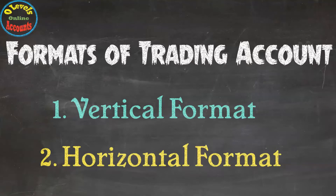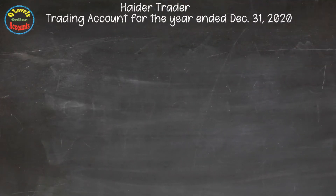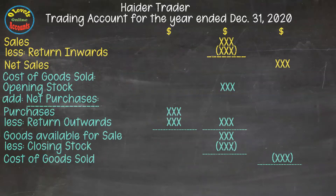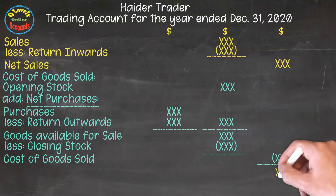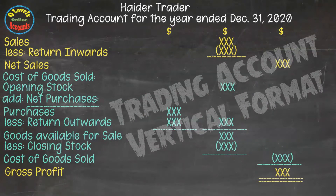The examiner normally asks for two types of trading account: vertical format and horizontal format. In the vertical format, we put the heading with owner name, account name, and time period — for example, for the year ended December 31st, 2020. We present net sales first, then describe cost of goods sold, and after deduction we get the gross profit as the final result. This is called vertical format because all working is done in a vertical style.